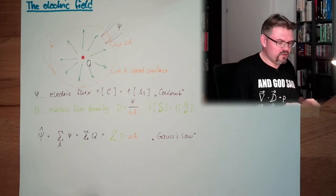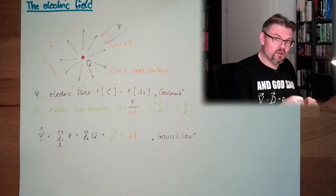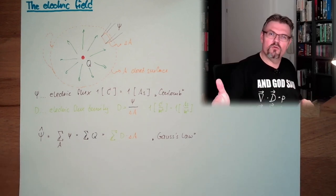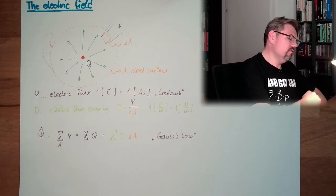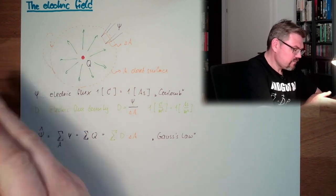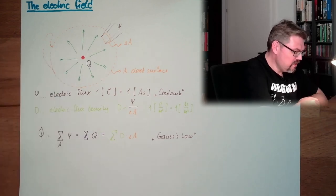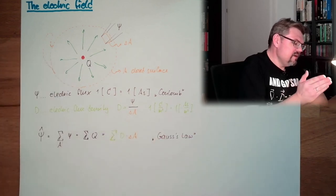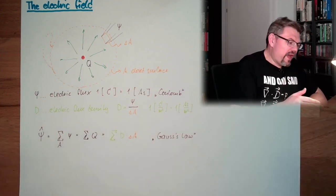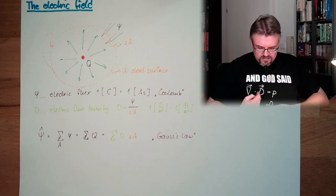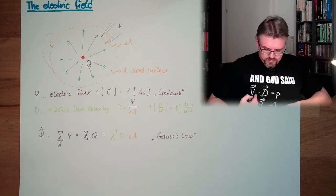In German it's Satz vom elektrischen Hüllenfluss. So we don't bring the Gauss inside there, we say what it is. If you just hear Gauss's law, you need to know what Gauss's law is. If you hear Satz vom elektrischen Hüllenfluss, the name gives you already a hint what is behind. Electric field. So that's it, that's actually it. And now we have a D, we have this D. This is, by the way, exactly what is written here. This is Gauss's law.